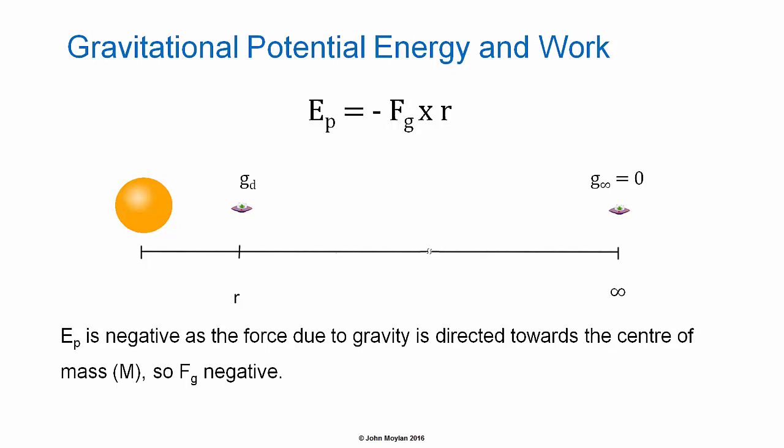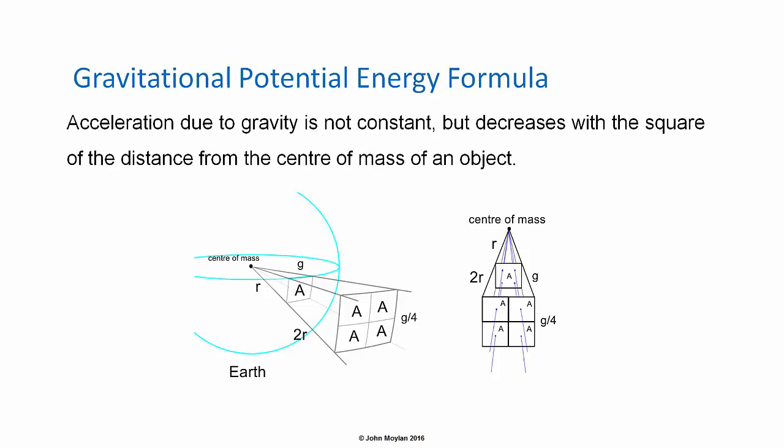In more general terms, the Gravitational Potential Energy of an object within the gravitational field of a mass is going to be equal to minus F subscript g, the force due to gravity on the object due to the gravitational field of the mass, multiplied by r, the distance between the center of mass of the object and the center of mass of the mass. Gravitational Potential Energy Formula.